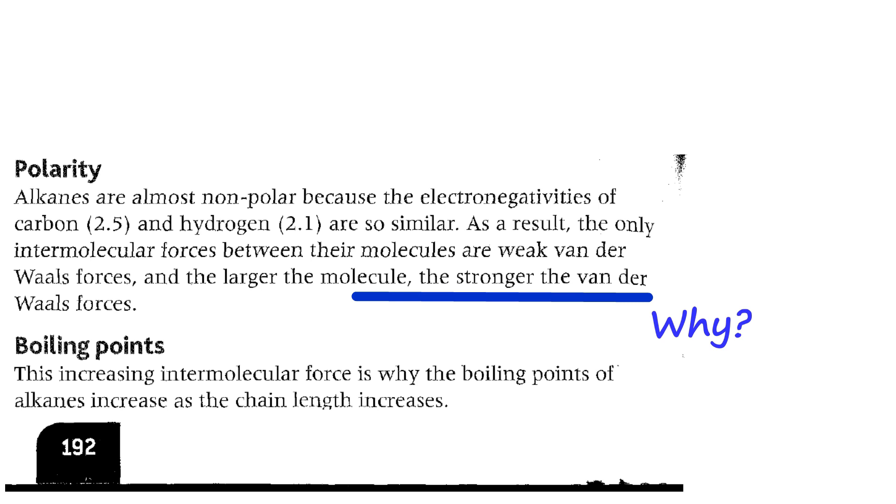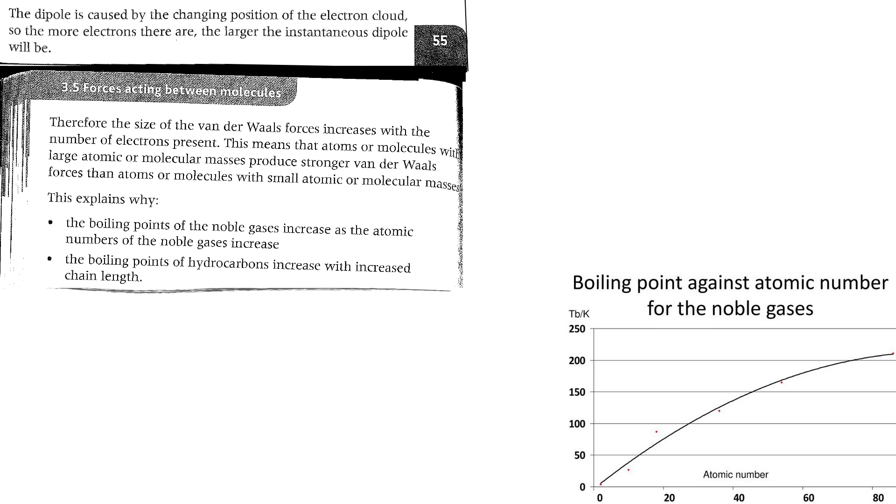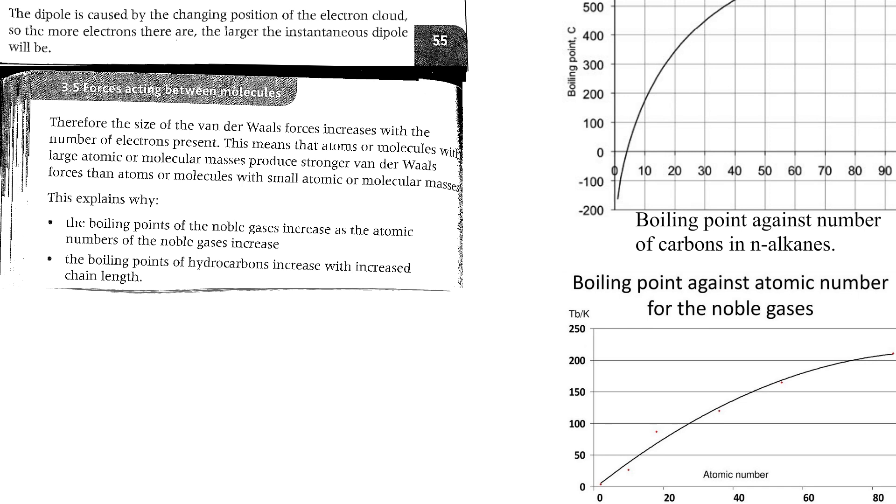We have revised the origin of the van der Waals forces, and we are ready to answer the question, why the larger the molecule, the stronger the van der Waals forces. Your book on page 55 goes on saying: the dipole is caused by changing position of electron cloud, so the more electrons there are, the larger the instantaneous dipole will be. Therefore, the size of van der Waals forces increases with the number of electrons present. This means that atoms or molecules with larger atomic or molecular masses produce stronger van der Waals forces. That explains why the boiling points of hydrocarbons increase with increased chain length.